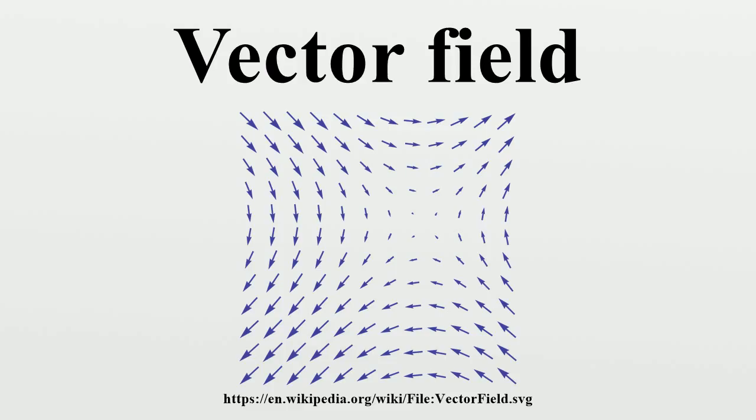Magnetic fields: The field lines can be revealed using small iron filings. Maxwell's equations allow us to use a given set of initial conditions to deduce, for every point in Euclidean space, a magnitude and direction for the force experienced by a charged test particle at that point. The resulting vector field is the electromagnetic field. A gravitational field generated by any massive object is also a vector field. For example, the gravitational field vectors for a spherically symmetric body would all point towards the sphere's center, with the magnitude of the vectors reducing as radial distance from the body increases.